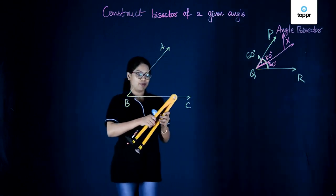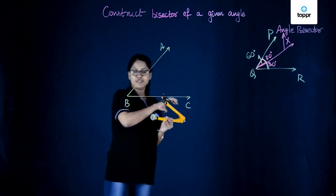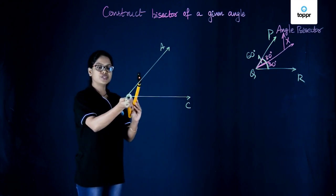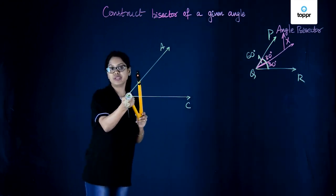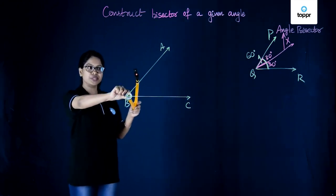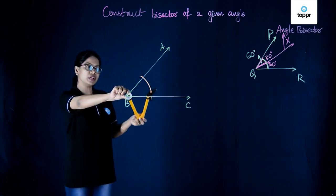Now the first step is, we'll be needing the help of a compass for this. The first step is constructing an arc of any convenient measure. So with B as the center, we're constructing an arc of any convenient measure.